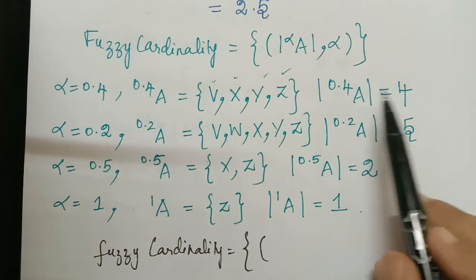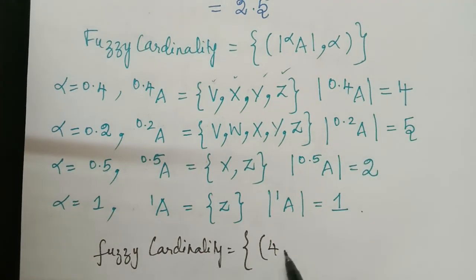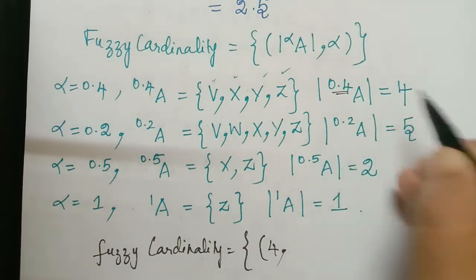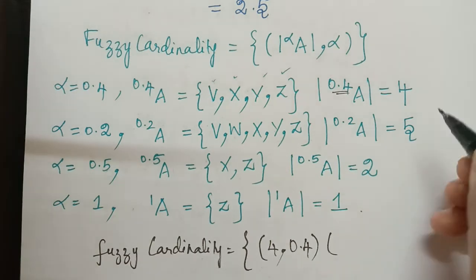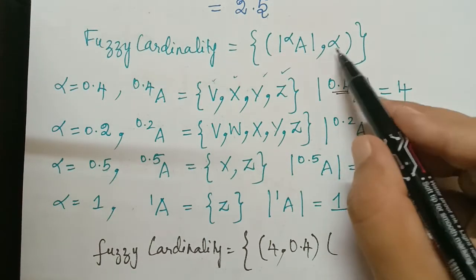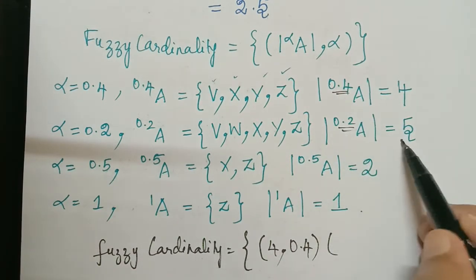Alpha. What is the value of alpha? It is 0.4. So this is how we have to write. Similarly the next set will be for alpha 0.2 we have it to be 5. So 5 comma 0.2.